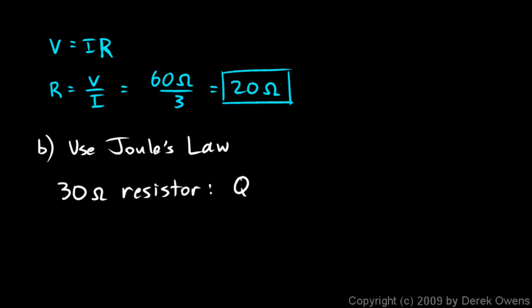For the 30 ohm resistor, the heat produced, we'll call it H, is I squared RT. I is the current, that's 4 amps squared times the resistance which is 30 ohms times the time, we're told 15 seconds.